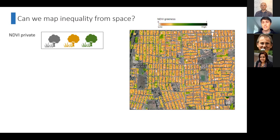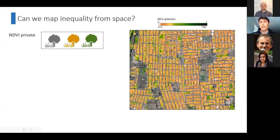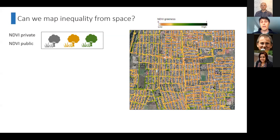The first thing we mapped was NDVI — the Normalized Difference Vegetation Index — a satellite index using information collected in the near-infrared wavelengths, which are reflected strongly by chlorophyll. The greener and more productive the plant, the higher the near-infrared reflectance and the higher the NDVI index. We measured NDVI in private spaces — gardens and houses — using the South African road network, and also in public spaces such as road verges, pavement islands, and parks using Open Street Map data.